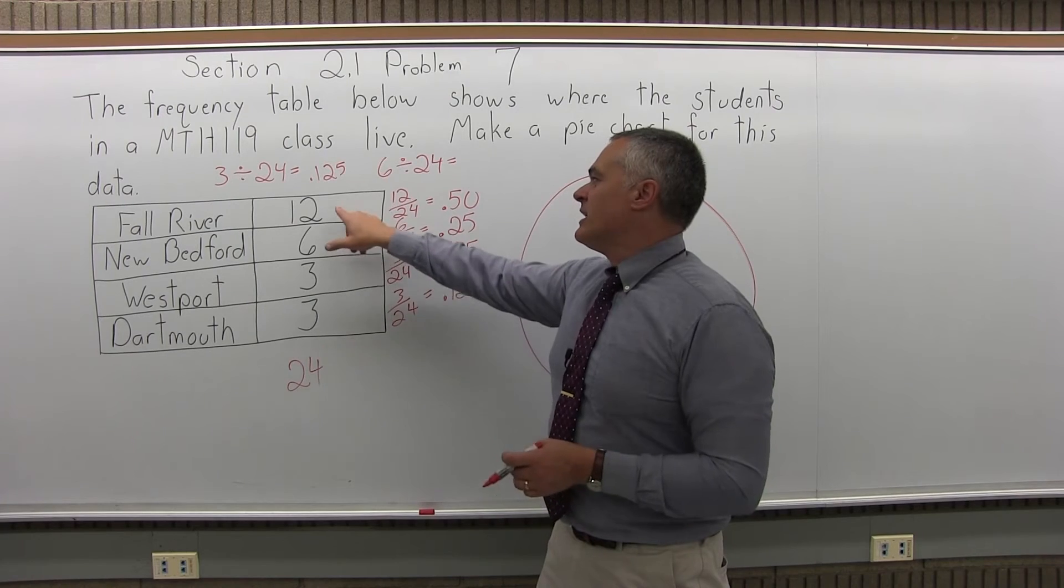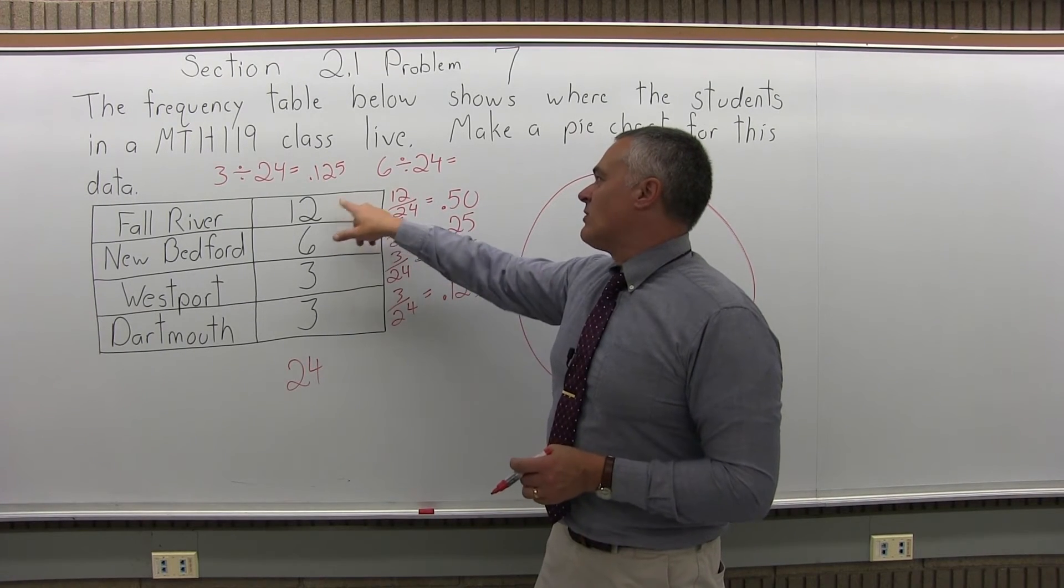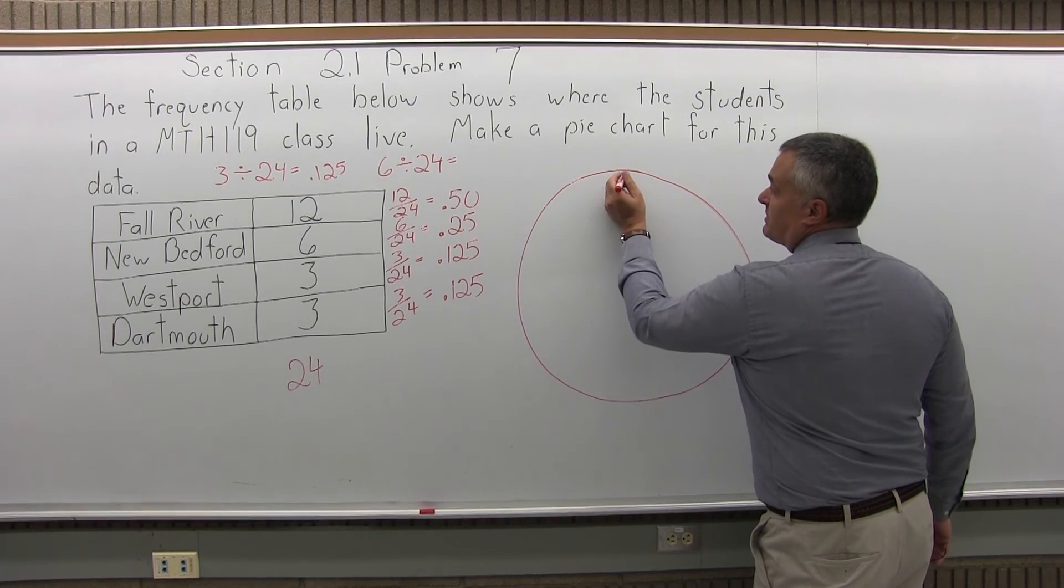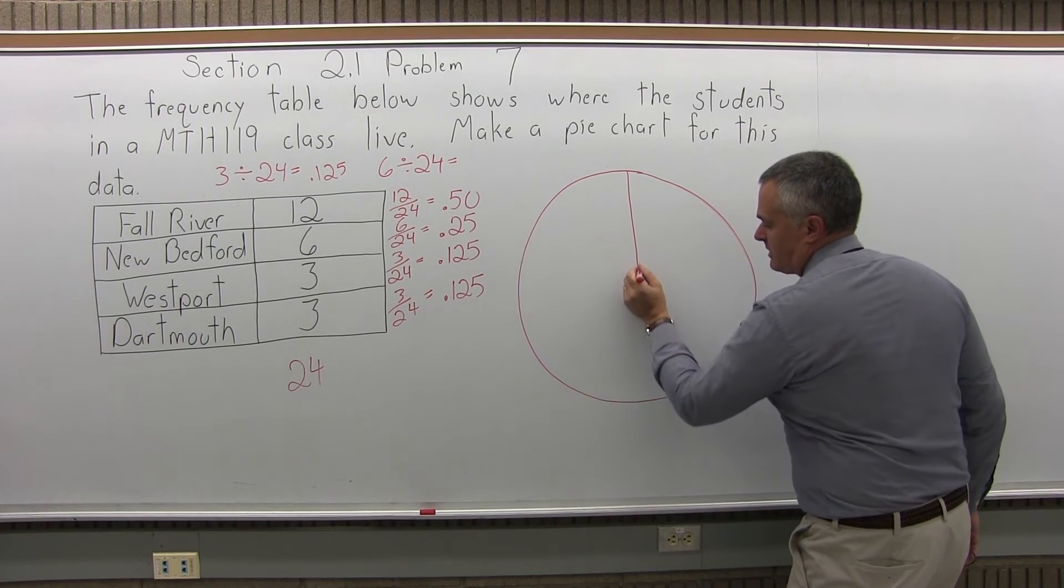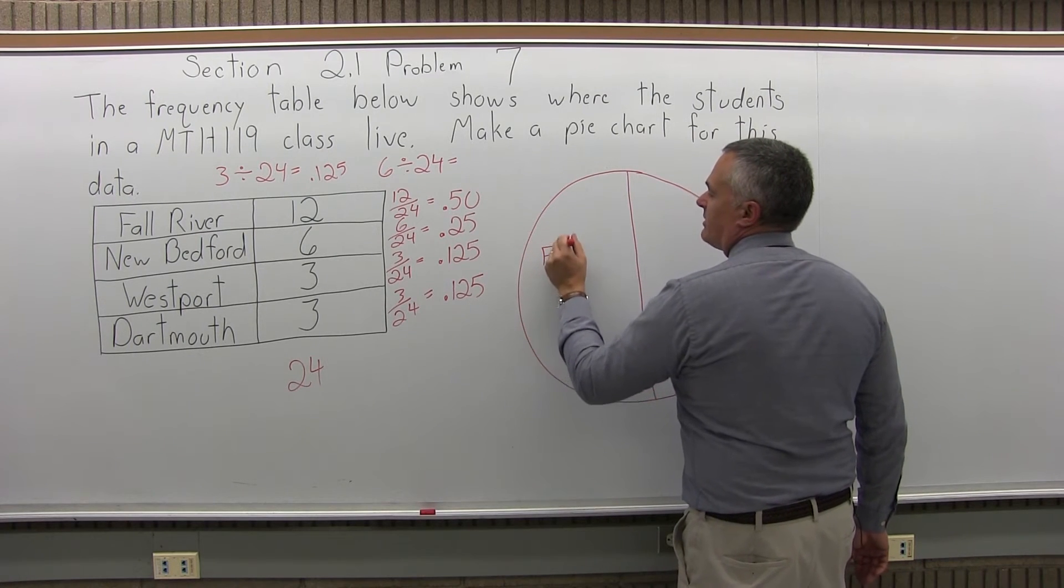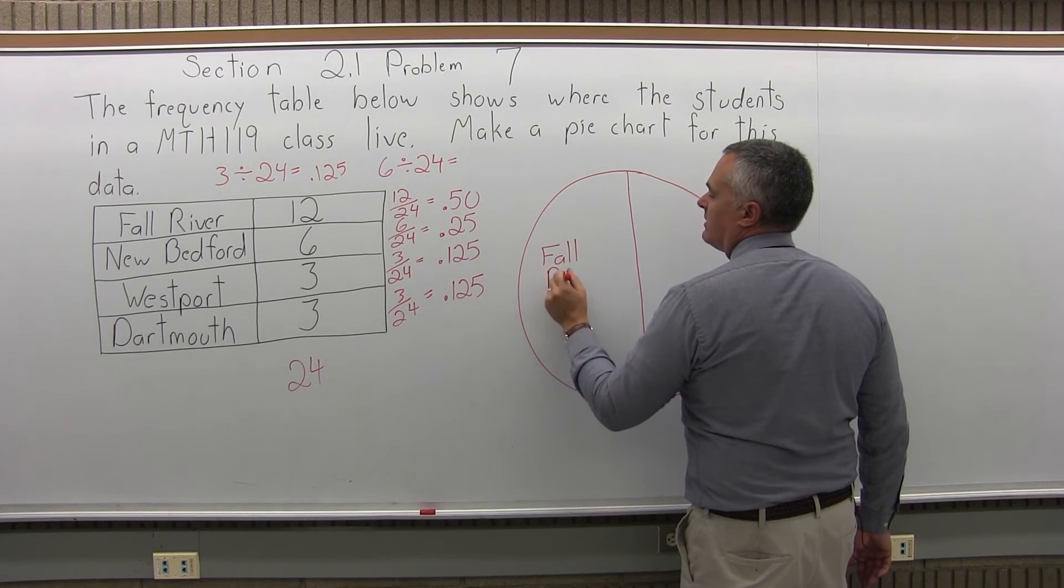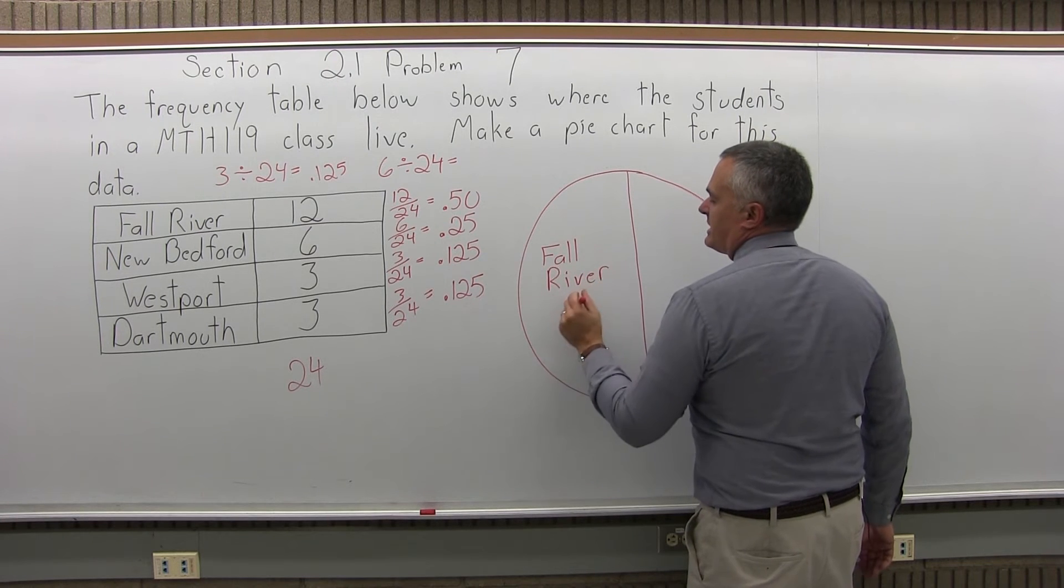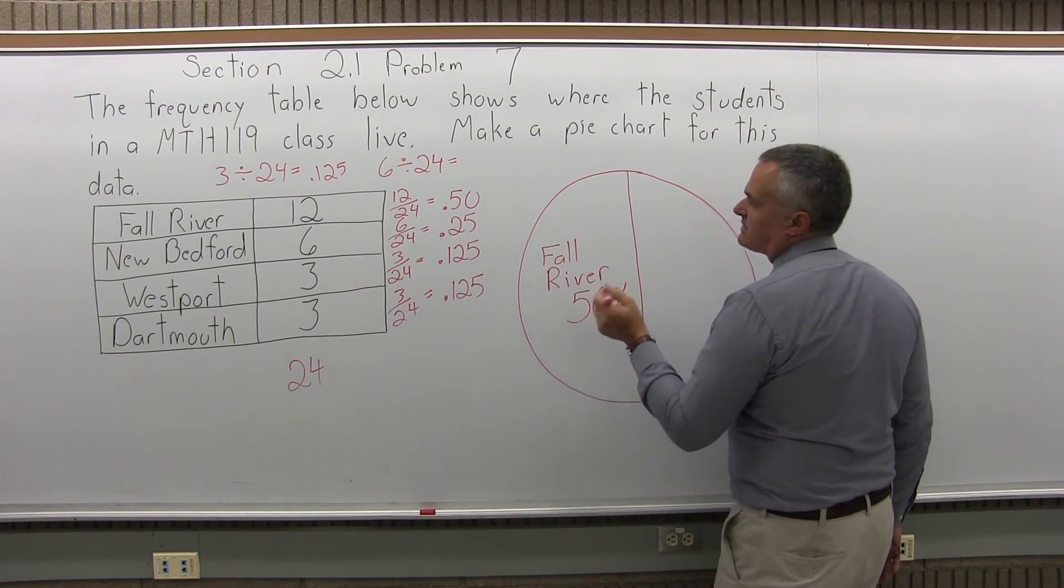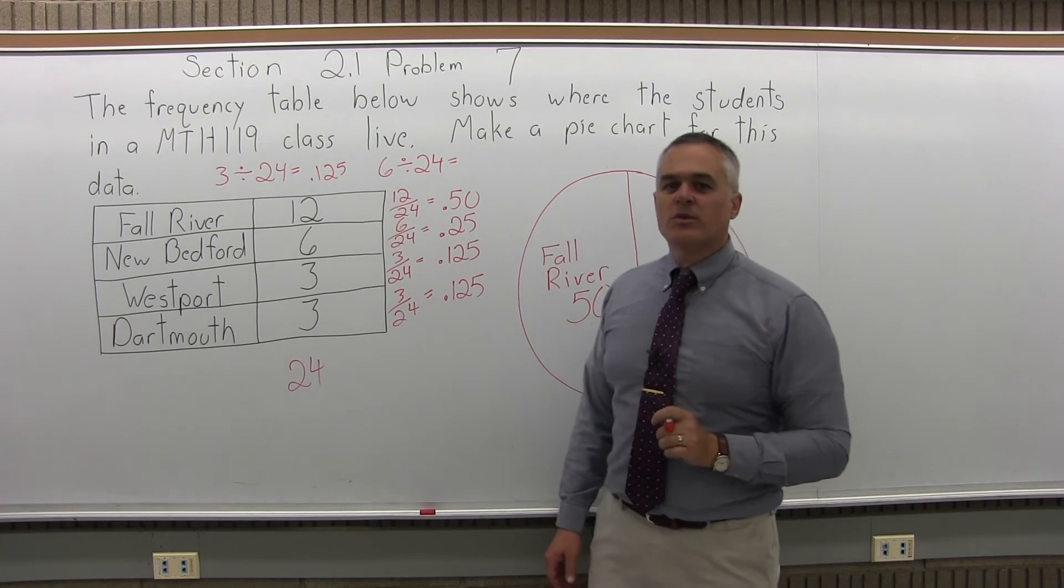So anyway, to draw a freehand, the Fall River students account for 50% of the class. So, it should be 50% of my pie chart. So, I'll split it pretty much down the center. I'll label this segment of the pie chart with Fall River and I'll put a percentage, 50%. Half the class is from Fall River, which is probably pretty realistic.